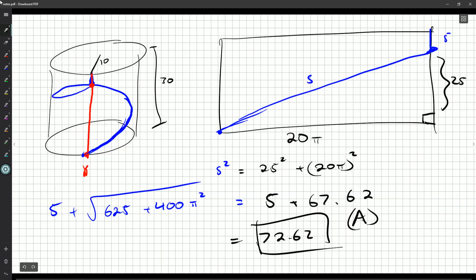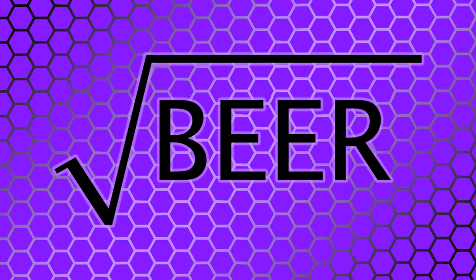And there we go, question number 22. A nice 3D geometry question turning into a 2D geometry question, and it was just a Pythagorean triangle there. Very nice. So I will see you in the next video for question number 23.